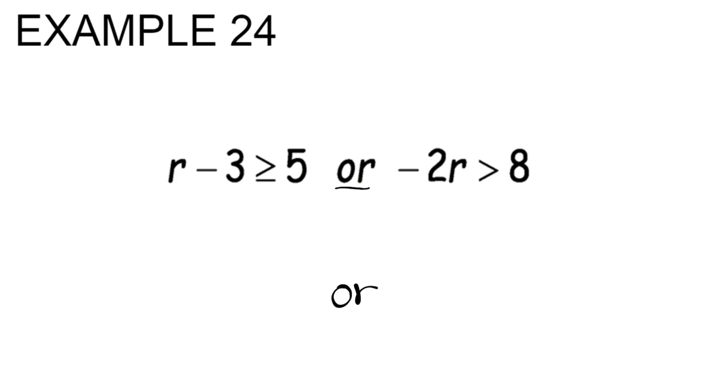We're going to solve the left side first. We're going to isolate the variable r by adding the constant 3 to both sides of the inequality. That's going to give us r is greater than or equal to positive 8.